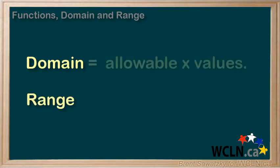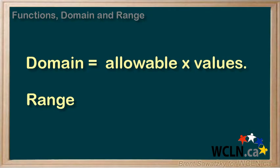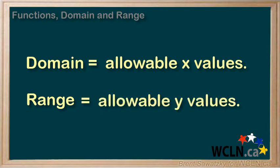Domain is the allowable X or input values for a given relationship, while Range is the allowable Y or output values for the given relationship.